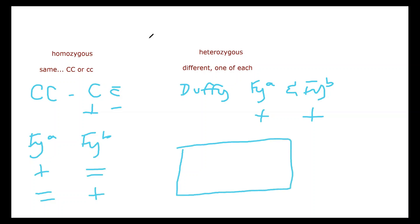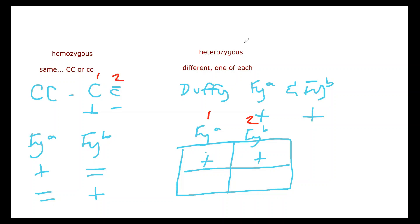Let's go over a panel example. We've got FYa and FYb. Let's say you've got a positive for FYa and a positive for FYb — is that homozygous or heterozygous? It's actually heterozygous. This is antigen one and this is antigen two — two different ones. If you have positive and positive, that means you have one of each, so that's heterozygous.